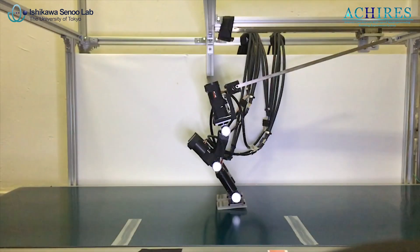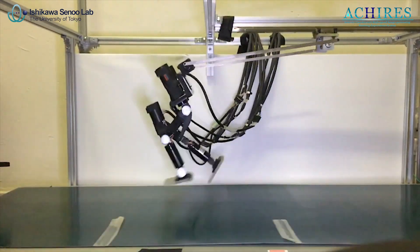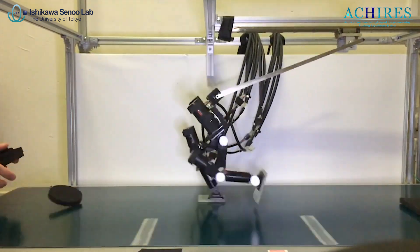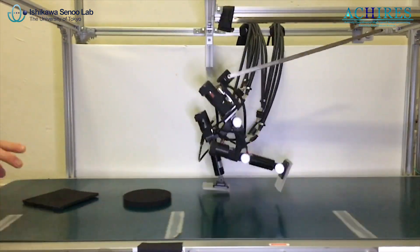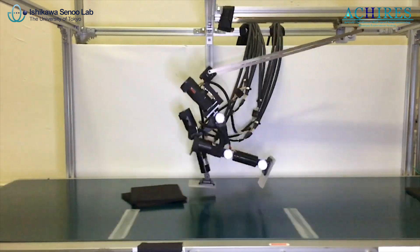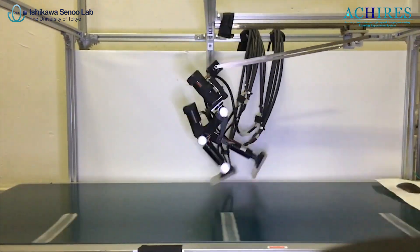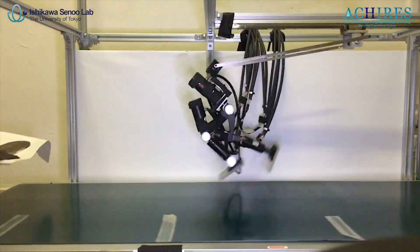This posture stabilization control enabled the robot to run over obstacles without using any information about incoming obstacles. The maximum height of the obstacles was 15 millimeters. That is about 10% of the leg length of the robot.